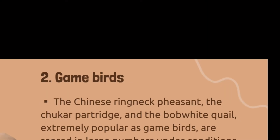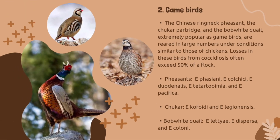The next birds are game birds. The Chinese ring-neck pheasant, the chukar partridge, and the bobwhite quail are extremely popular as game birds and are reared in large numbers under conditions similar to those of chickens. Losses from coccidiosis often exceed 50 percent of a flock. Common species in pheasants include Eimeria fagiani, Eimeria colchici, Eimeria duodenalis, Eimeria tetartoemia, and Eimeria pacifica. Chukars are infected by Eimeria kofoidi and Eimeria legionensis. Bobwhite quail are infected mainly by Eimeria lettyae, Eimeria dispersa, and Eimeria colini.